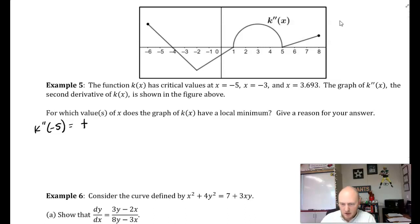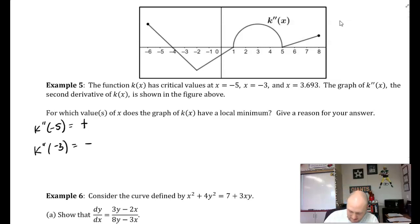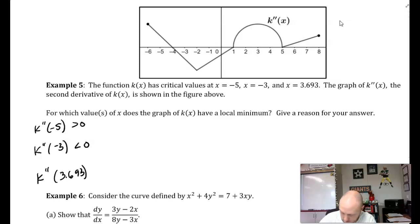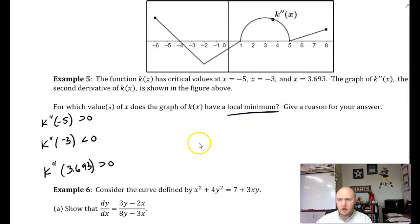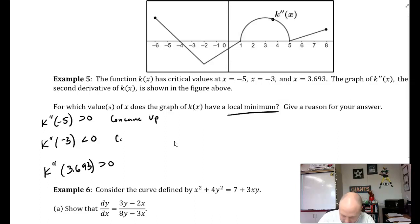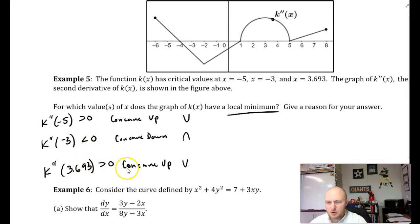k double prime of negative 5 is a positive value — greater than 0. k double prime of negative 3 is a negative value — less than 0. And k double prime of 3.693, that point is above the x-axis, so we know it is greater than 0. So k at negative 5 is concave up, at negative 3 is concave down, and at 3.693 is concave up.